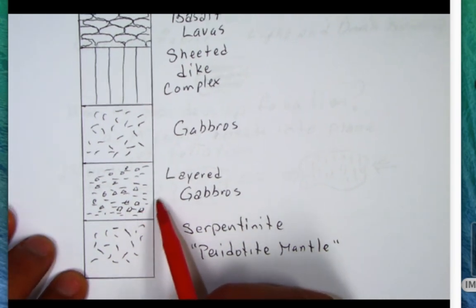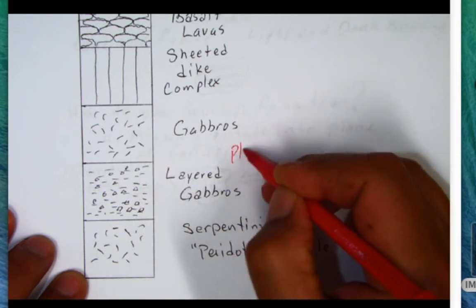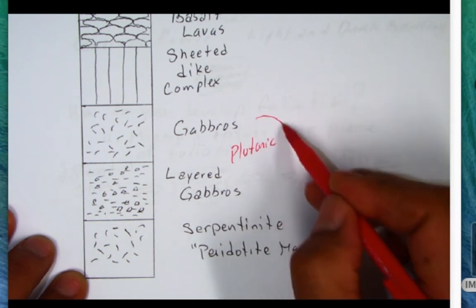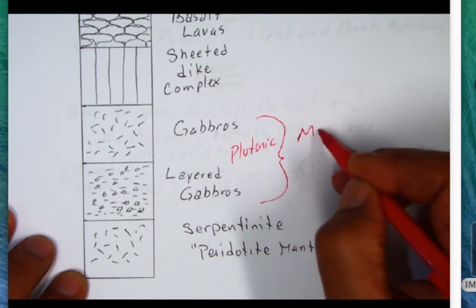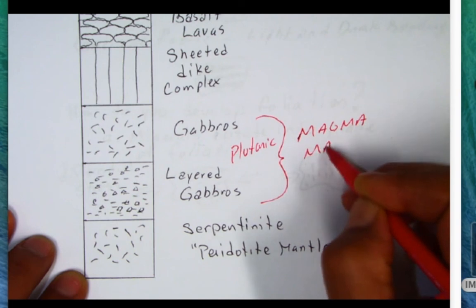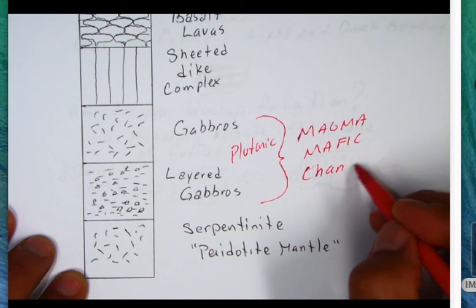As we go to the next layer in the sequence, we find layered gabbros and gabbro. Remember these are both plutonic rocks, and more importantly the layered gabbros and the gabbros represent a magma chamber, essentially a mafic magma chamber where you're forming the plutonic rocks here.